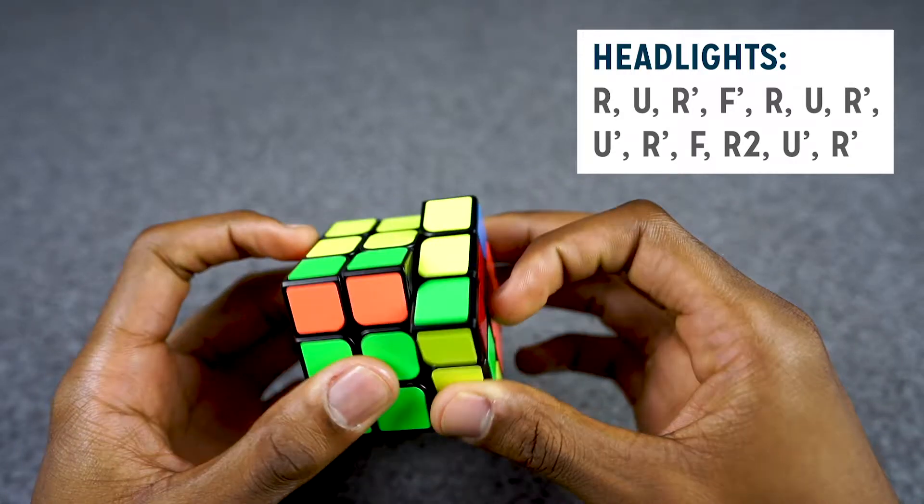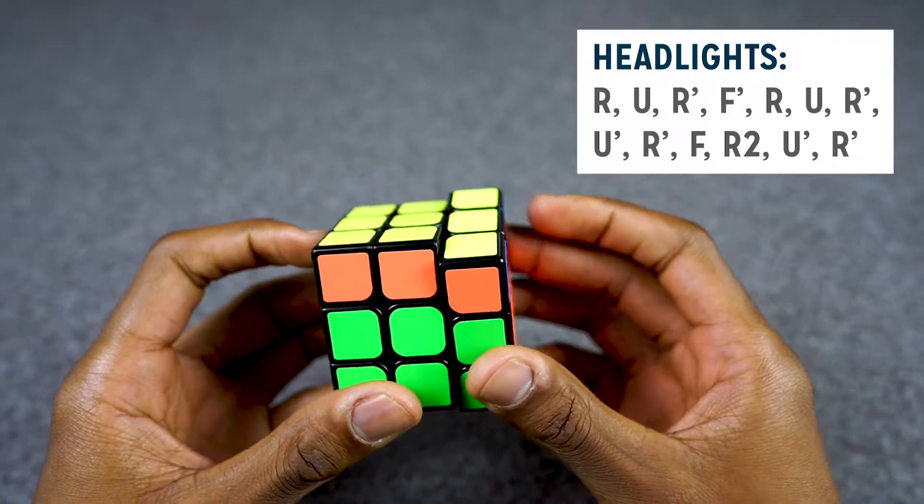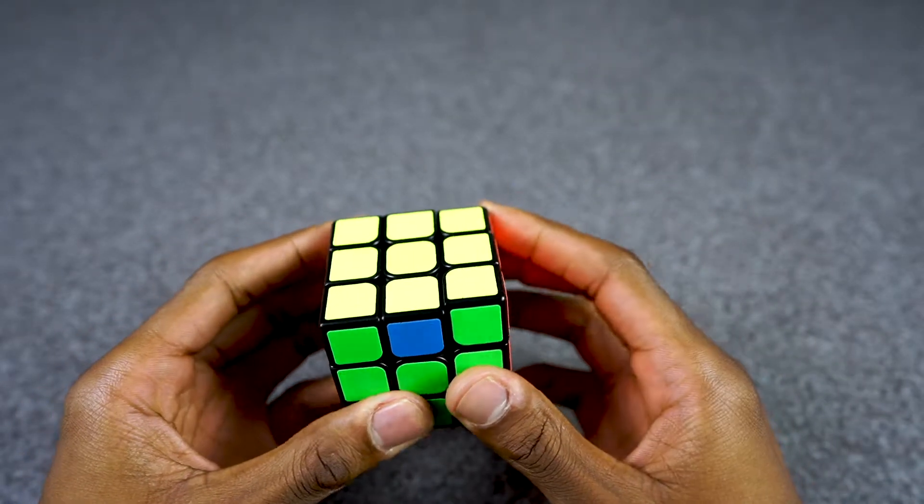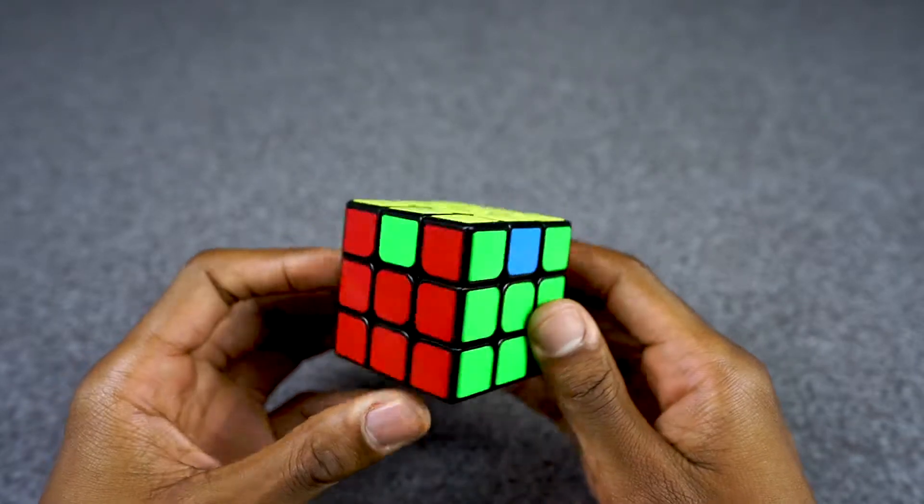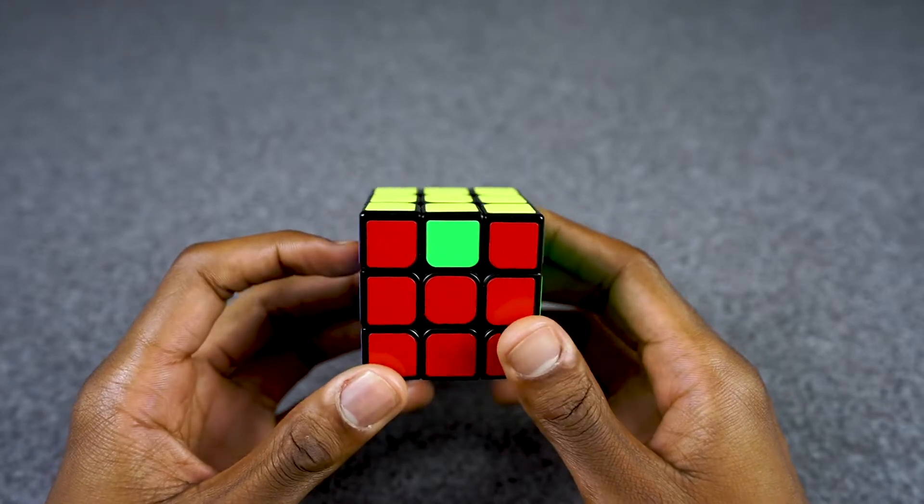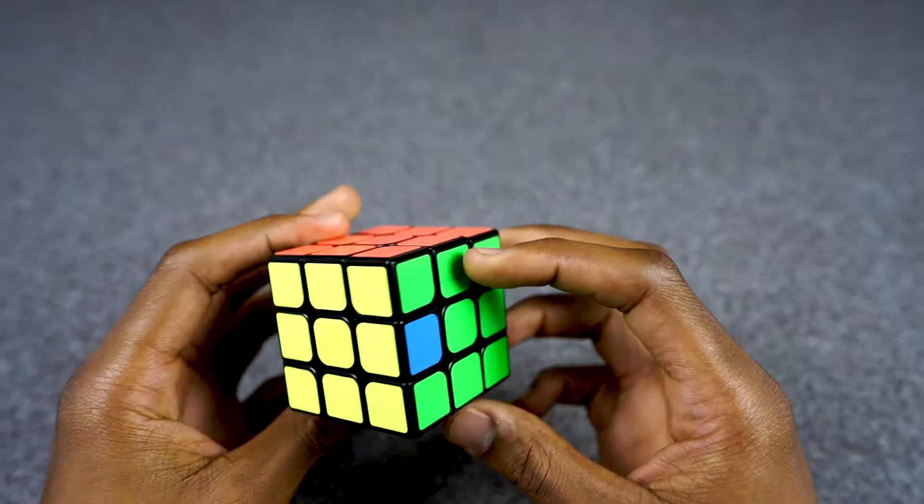F, R2, U prime, R prime. And there we go. When we're done with it, the desired look we're going for before we do our last algorithm is going to be something like this.